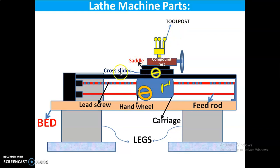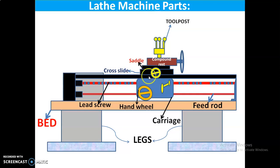Cross slide is mounted on the carriage. Its function is to provide the cross feed of the tool, and its movement is perpendicular to the center of the lathe. The basic function of the cross slide is to hold the tool.